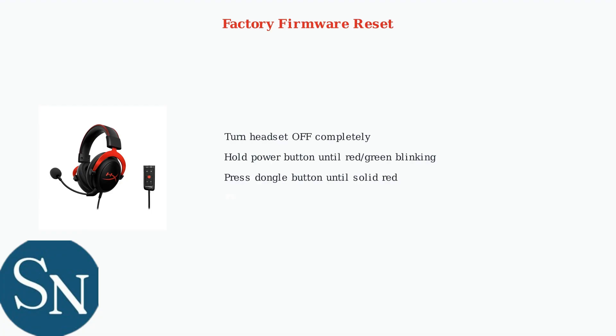For persistent issues, perform a factory firmware reset. This returns your headset to its original firmware state, which can resolve update-related problems. Ensure your headset is completely turned off, then hold the power button until it blinks red and green. Press the dongle button until it shows solid red. This resets the headset to factory firmware settings.